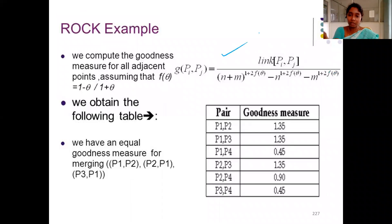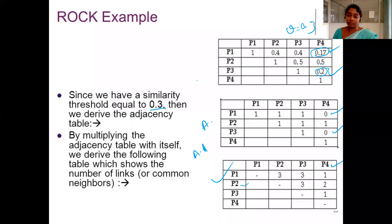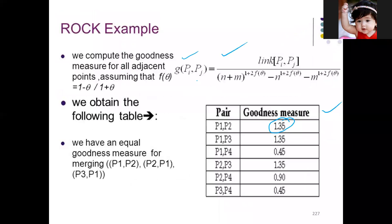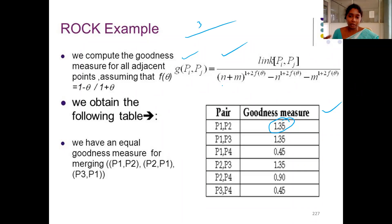This is the formula for the goodness of measure. Let me calculate for one value first: the goodness of measure between P1 and P2. The link between P1 and P2 — how many links are there in the table? Three. So I substitute three links in the formula: three divided by N plus M, where N indicates the number of elements in cluster P1 and M indicates the number of elements in cluster P2.